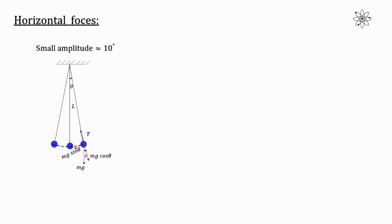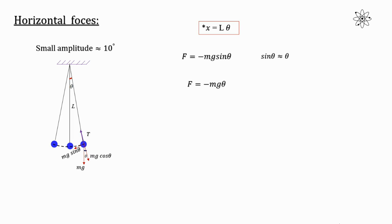With x equals l theta established, let's find the horizontal forces acting on the bob. The internal restoring force F equals minus mg sin theta. This is the only force acting on the pendulum that is responsible for bringing the bob back to the mean position. Again, since theta is very small, for small angular displacement sin theta is approximately equal to theta. So we can write F equals minus mg times theta.